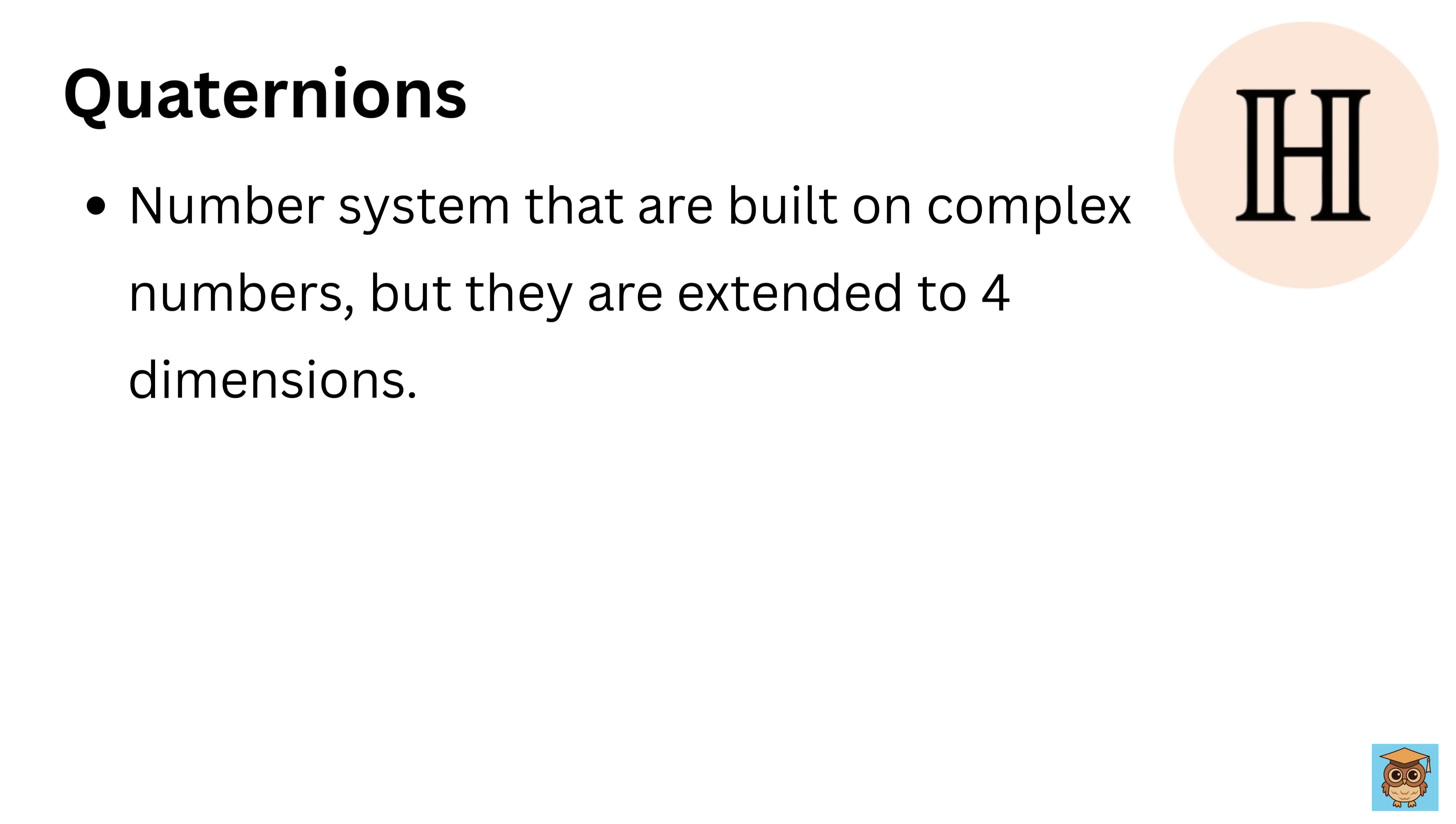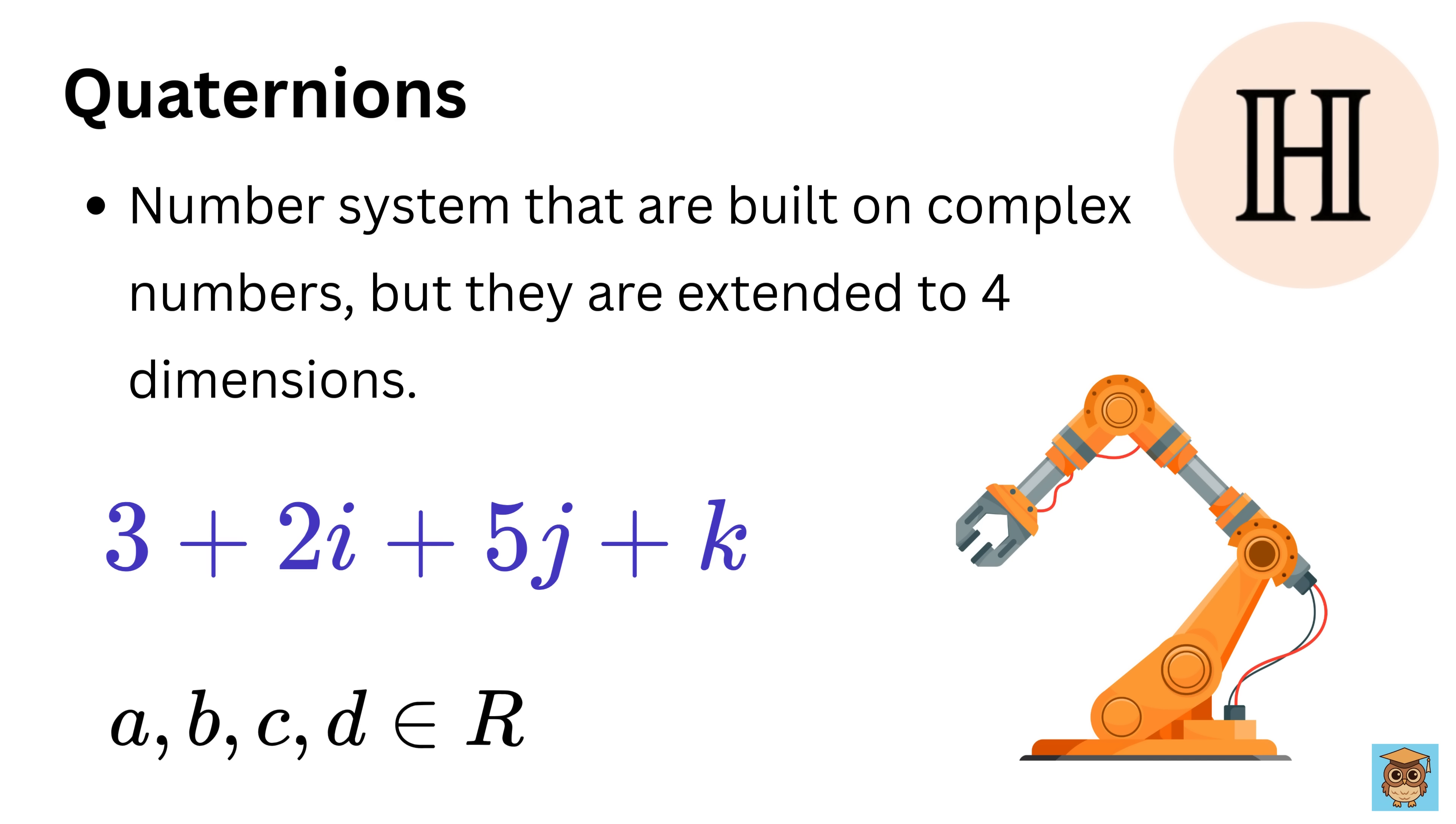Quaternions are a number system that are built on complex numbers, but they are extended to four dimensions. A quaternion is written as a plus b times i plus c times j plus d times k, where a, b, c, and d are regular numbers. And i, j, and k are special units with rules like i times i equals -1, and i times j equals k. For example, a quaternion could be 3 plus 2 times i plus 5 times j plus 1 times k. They're widely used in 3D computer graphics and robotics to handle rotation smoothly, like rotating a spaceship in a game without glitches.